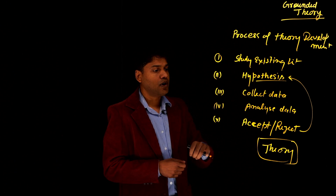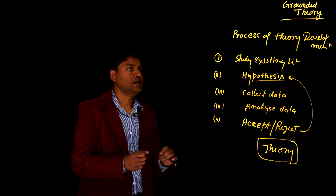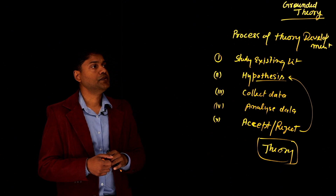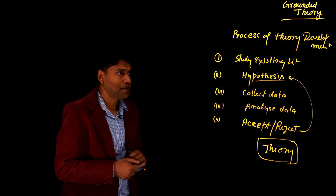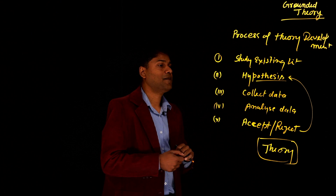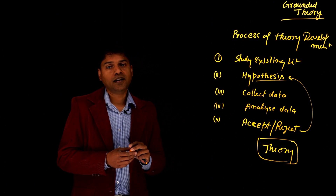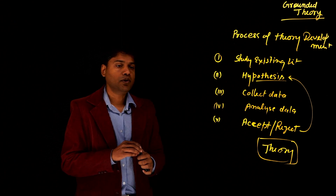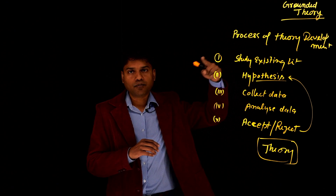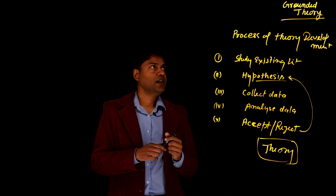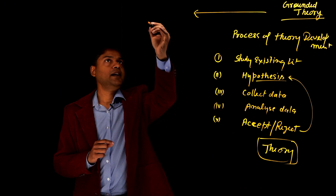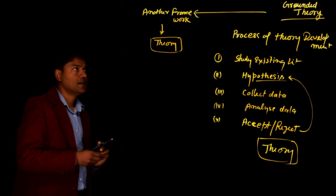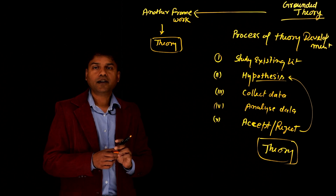That's a normal, very common standardized process which is adopted and used in quantitative research. You have a hypothesis based on the existing literature, you collect data and analyze the data, and see if it confirms the hypothesis or not. That's how this cyclical process keeps going. When grounded theory came in, it provided another framework to develop a theory. In grounded theory, they said you don't need a hypothesis.